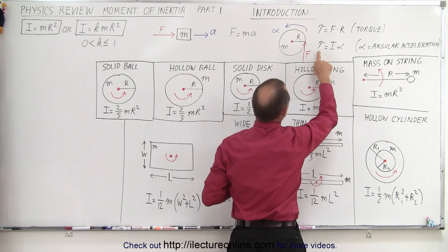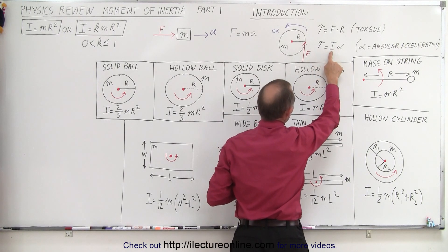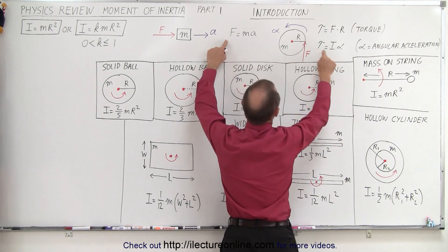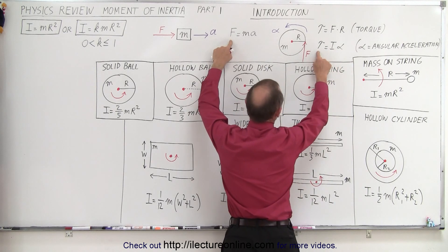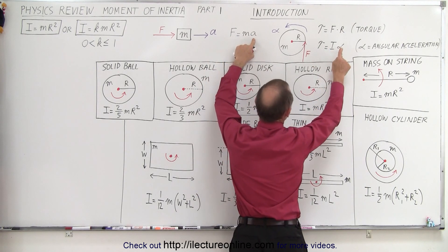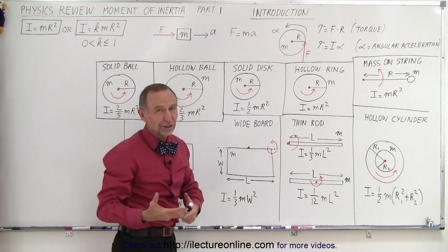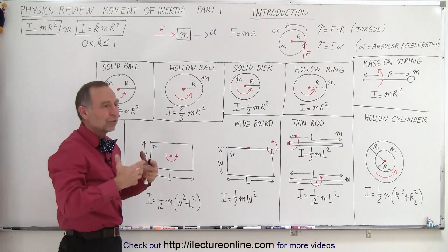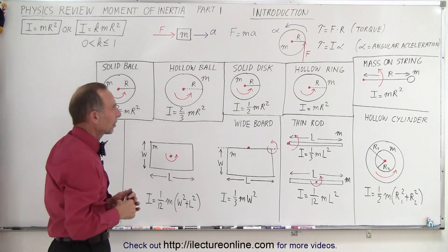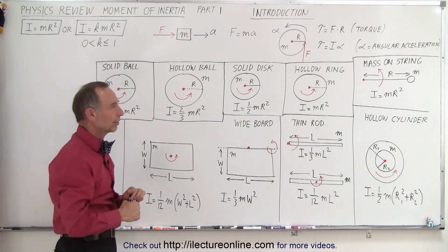That's called the torque, and if we set the torque equal to the moment of inertia times the angular acceleration, we get a very similar equation. Instead of force, we use torque. Instead of mass, we use moment of inertia. Instead of linear acceleration, we use angular acceleration. So moment of inertia is the opposition or resistance to angular acceleration, just like mass is resistance to linear acceleration.